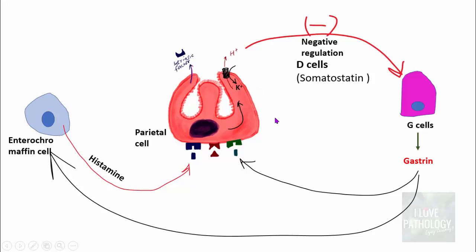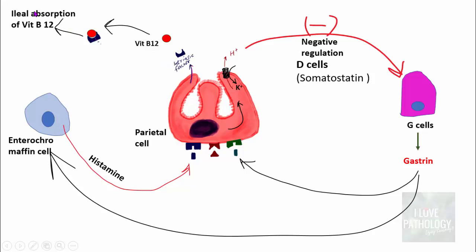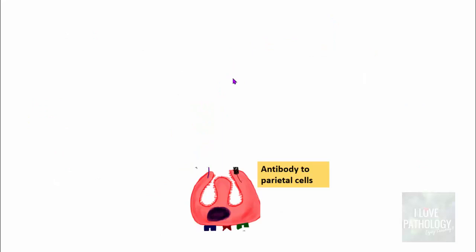We should also note that parietal cells secrete intrinsic factor, which is responsible for binding vitamin B12. This complex of vitamin B12 and intrinsic factor is essential for vitamin B12 to be absorbed in the ileum. Now let us see what really happens in autoimmune atrophic gastritis — when there are antibodies against these parietal cells.